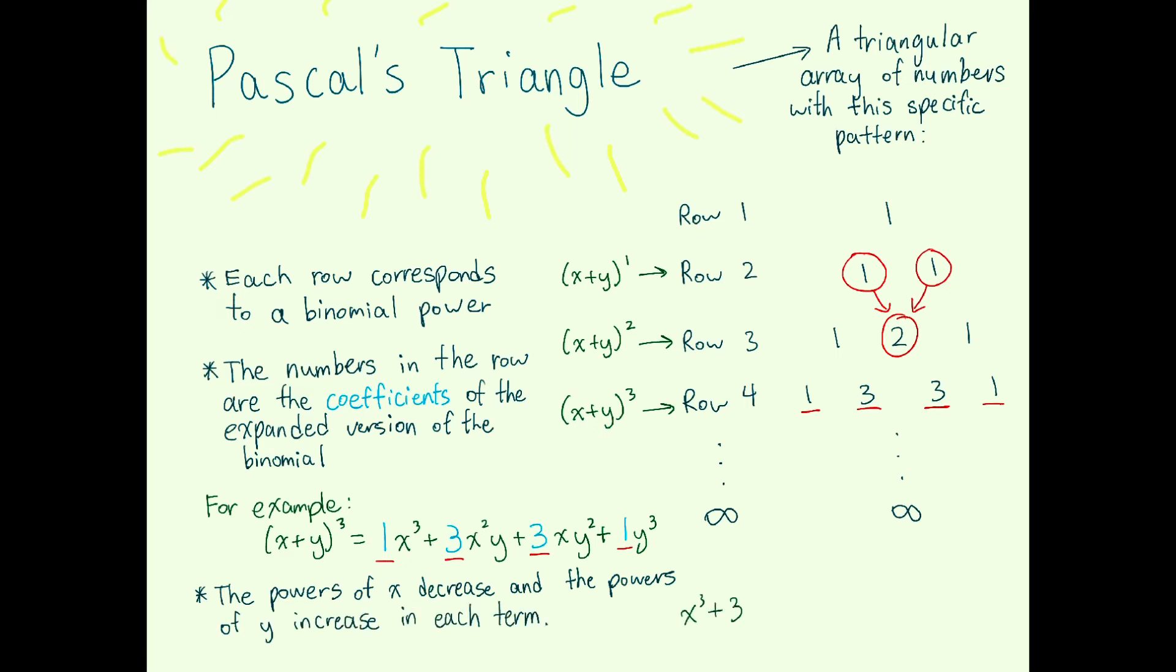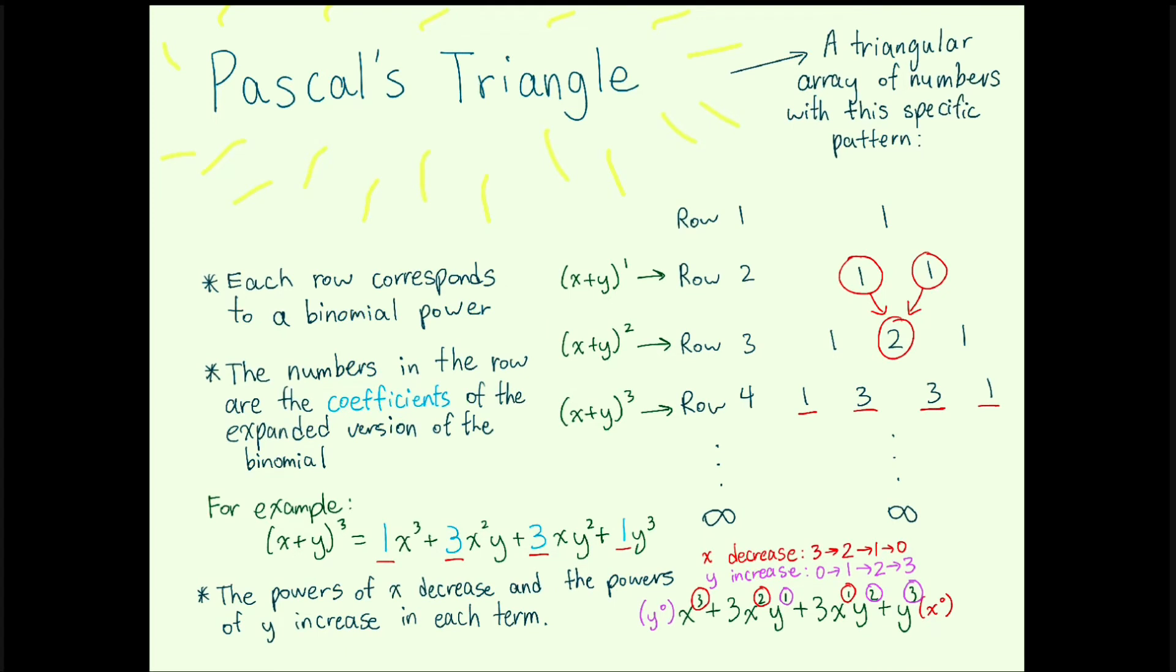Finally, the last part you need to know in order to write out the entire expanded version of any binomial x plus y is that the powers of x decrease with each term until 0, and the powers of y increase with each term starting from 0.